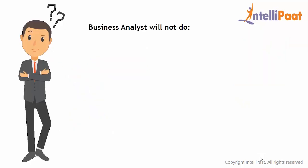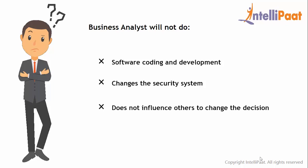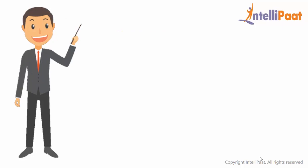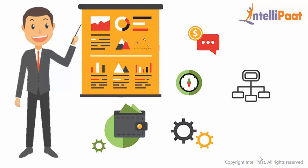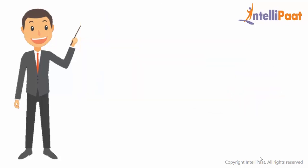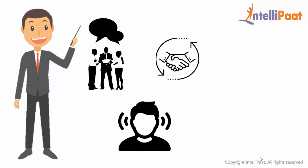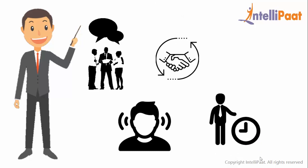You must be thinking — does the business analyst develop code or recommend changes to the project? The business analyst will not do any software development or coding, does not recommend changes to the security system, and does not attempt to influence other players. What he will do is produce a comprehensive set of requirement specifications that everyone will sign off on, which the development team will then use to make changes to the system. Business analysts do this using communication skills, active listening, negotiation and conflict resolution, organization and time management, and presentation skills.